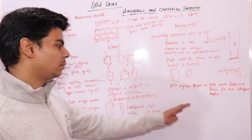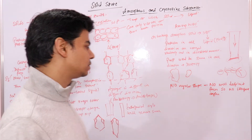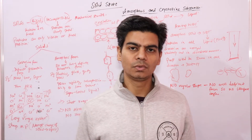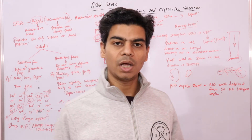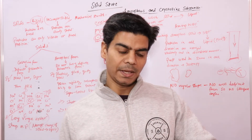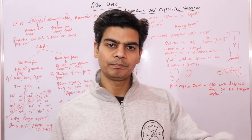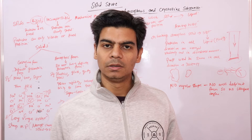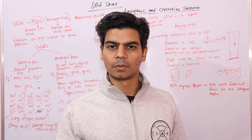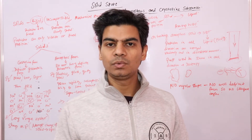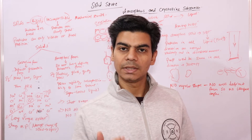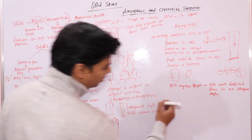This is also one point of difference between amorphous and crystalline solids. Now, one important thing about amorphous solids: any material can be converted into amorphous or glassy form by melting it and then cooling it rapidly, or by taking that material in vapor form and then freezing the vapors. The material obtained on rapid cooling or on freezing of vapors is your amorphous substance.